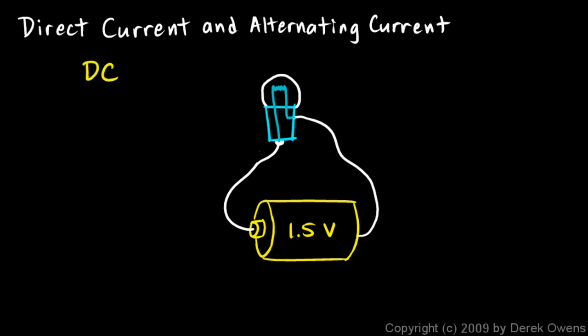And what that means is that the electrons come out of the battery and they flow around this circuit in one direction, and they just continuously flow in one direction. The direction never changes, and batteries like this produce direct current.